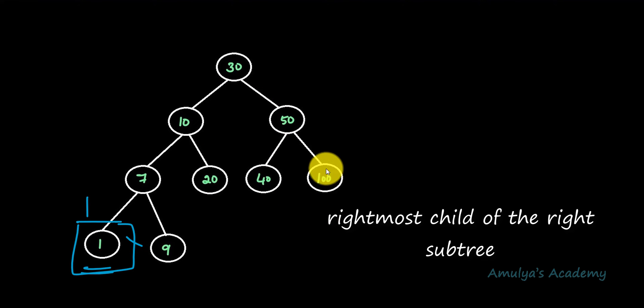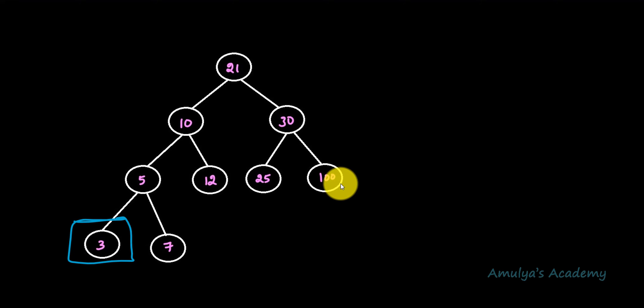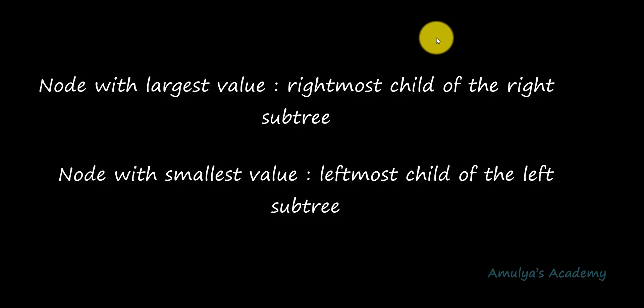If the right subtree is completely empty, then the value of the root node will be the largest value. That means we only have nodes in the left subtree and root, and since left subtree nodes have keys lesser than the root, the root node holds the largest value. For example, in this binary search tree the rightmost leaf node contains the largest value — 100 is the largest value. Smallest will be the leftmost child of the left subtree; largest will be the rightmost child of the right subtree.